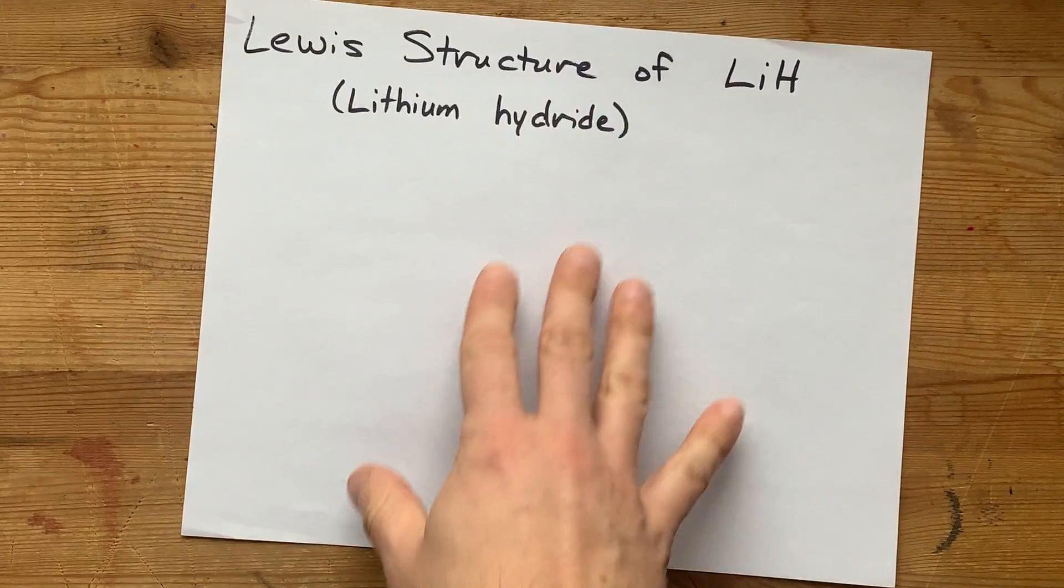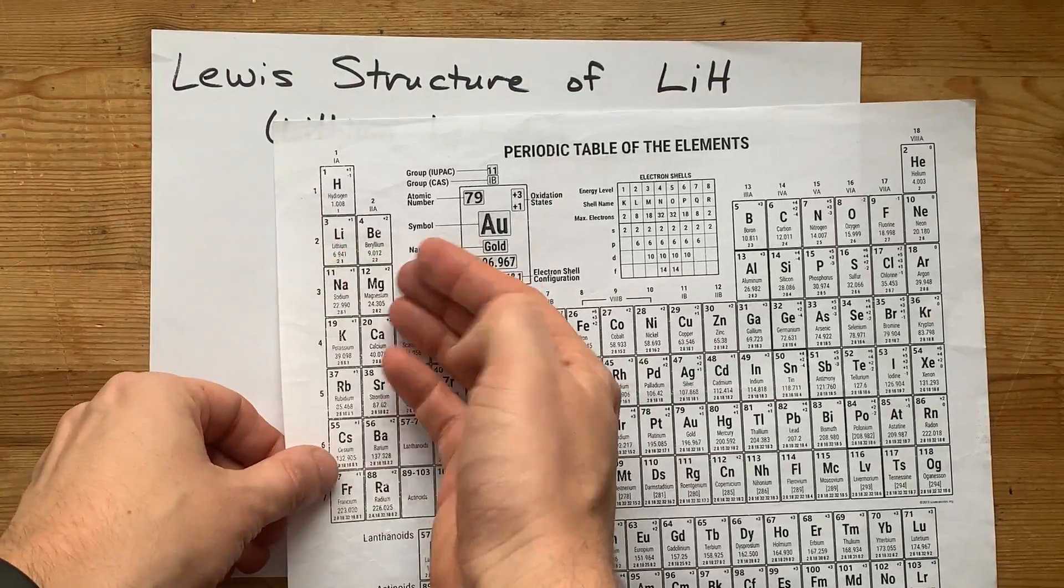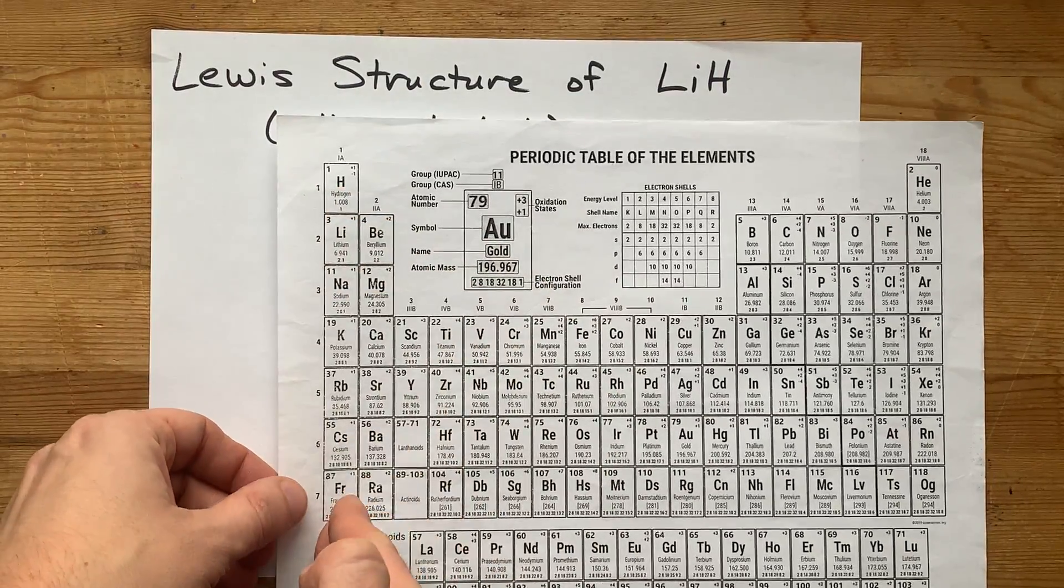We're going to draw the Lewis structure of lithium hydride. Now, lithium is a metal. It's one of the alkali metals.